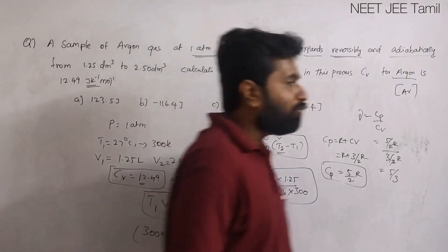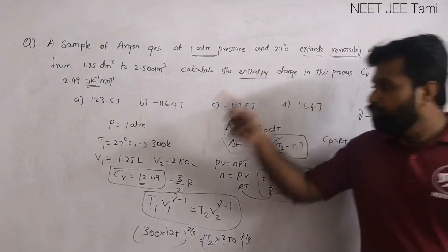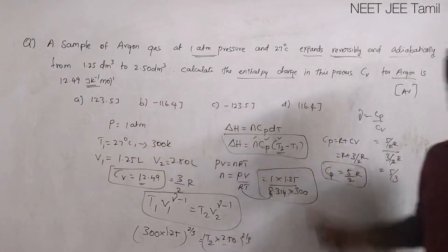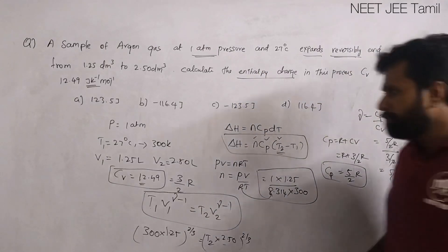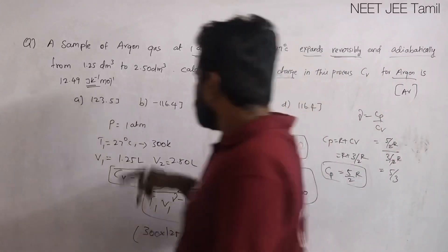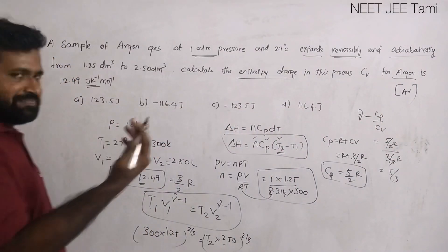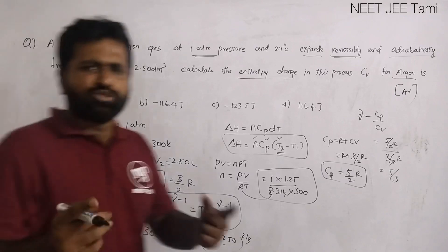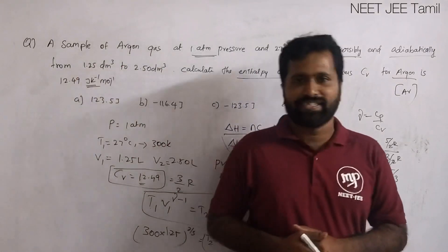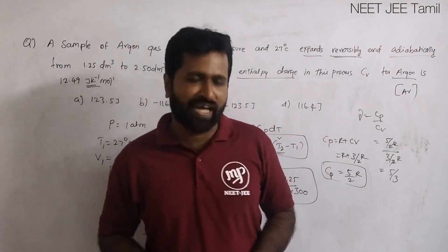Now, substituting all values into delta H equals nCp(T2 minus T1), we can calculate the enthalpy change. This question shows how many concepts come together. Try working out the answer and share it in the comment section. All the best, thank you.